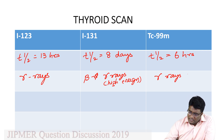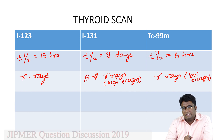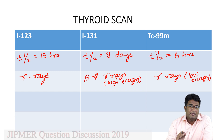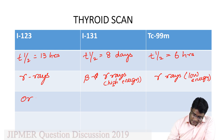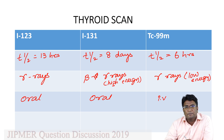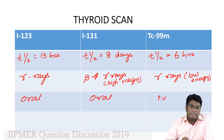Iodine 123 and iodine 131 used in thyroid scanning are given by the oral route, but technetium 99m is given by the injectable intravenous route. So iodine 123 as well as iodine 131 are given orally for thyroid scanning, but technetium 99m is given intravenously.